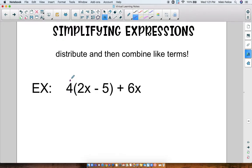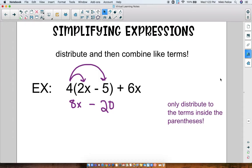So we are going to do 4 times 2x which we know is 8x, and then we are going to distribute and do 4 times 5 which we know is 20, and I can bring down my minus sign. So now my question is, do we have to do 4 times 6x? The answer is no, we do not because we only distribute to the terms inside the parentheses. 6x is not inside the parentheses, it's on the outside. So we just bring down plus 6x.